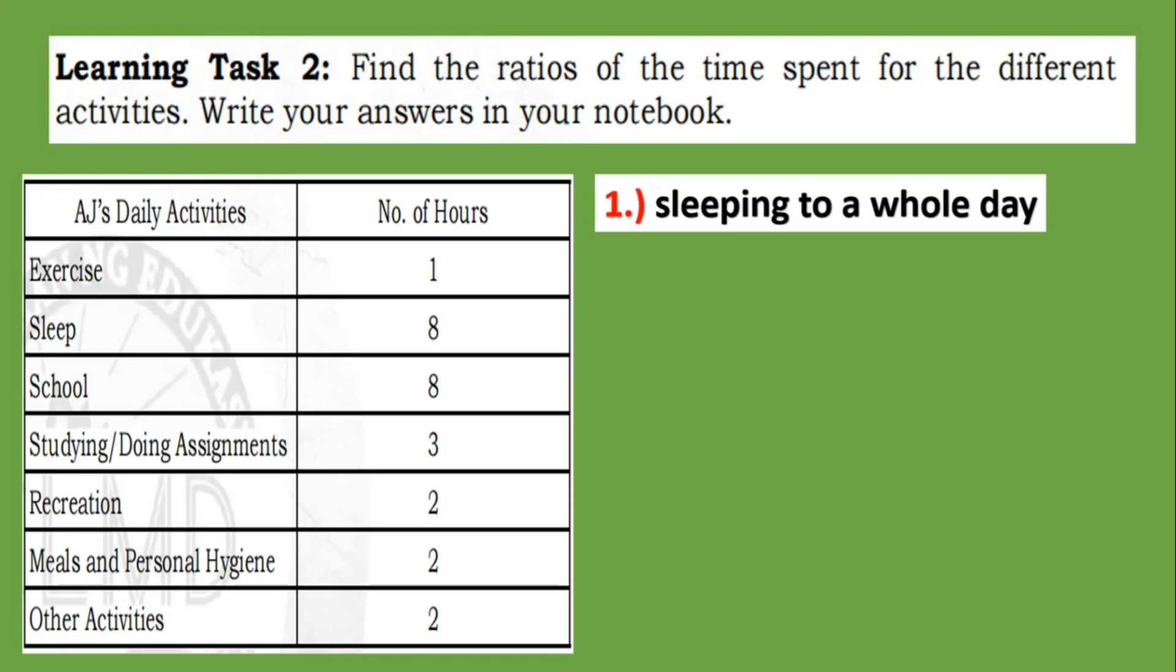So for number one, we have sleeping to a whole day. So the number of hours that AJ sleeps in a day is eight hours. And in a day we have twenty-four hours. So we write this in ratio as 8:24. So eight hours for sleep and twenty-four hours in a day. So greatest common factor would be eight. So eight divided by eight is one, and twenty-four divided by eight is three. So the lowest term is 1:3.